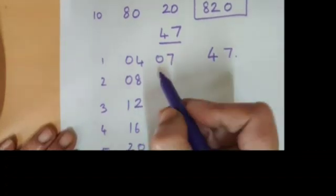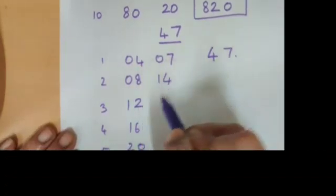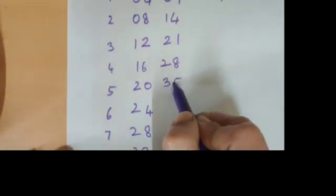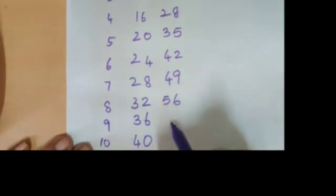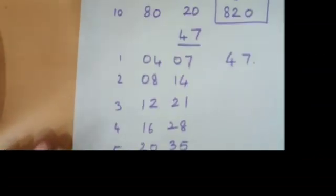7 times table, you need to write it here. So we have 14, 21, 28, 35, 42, 49, 56, 63, and 70. So you have written the 7 times table.